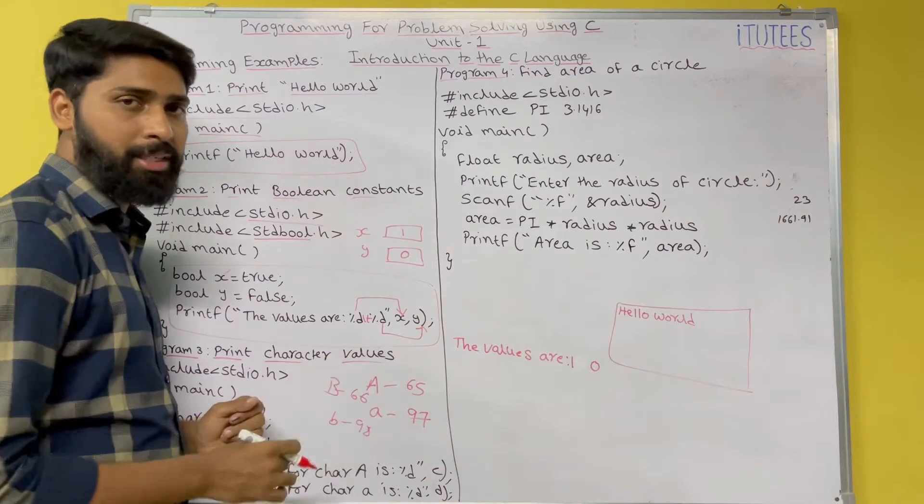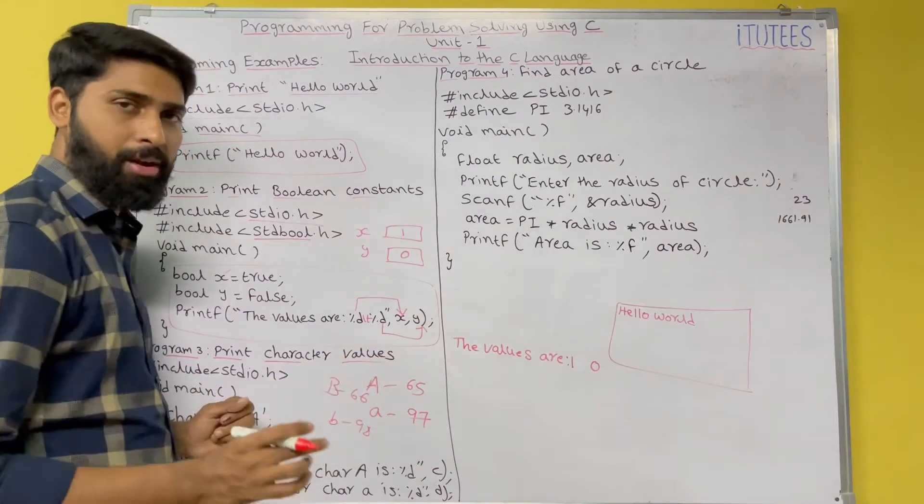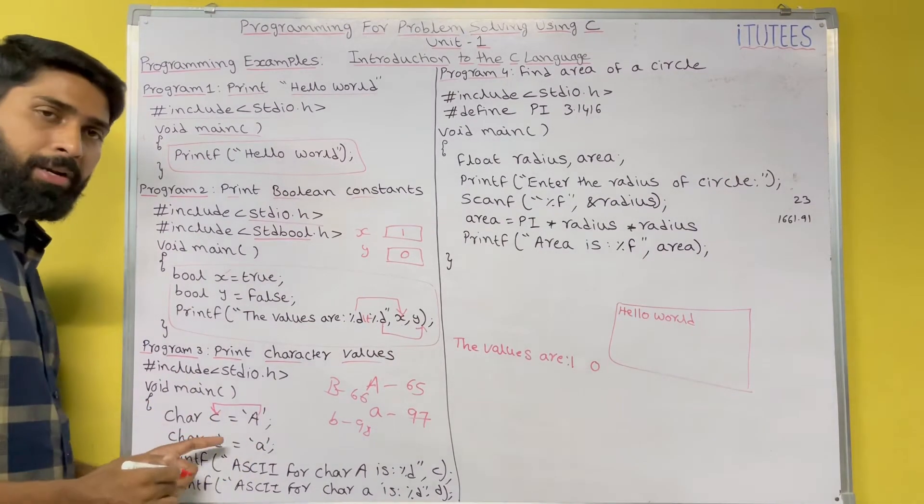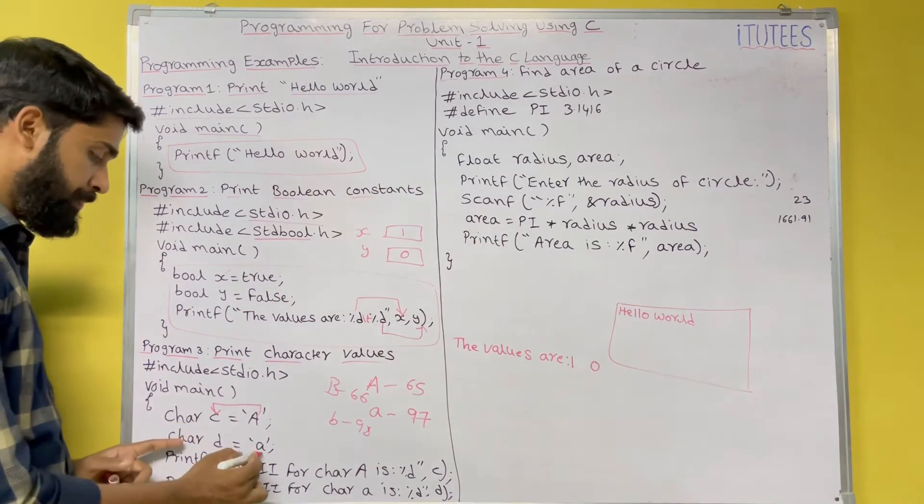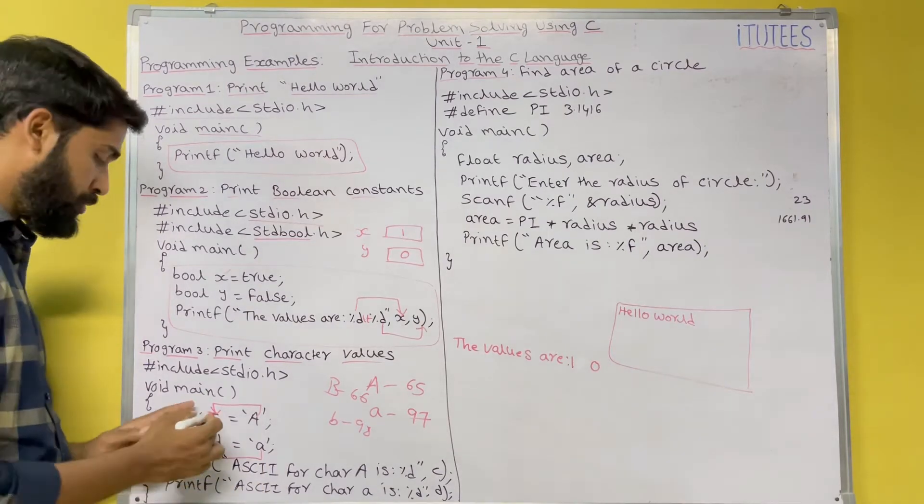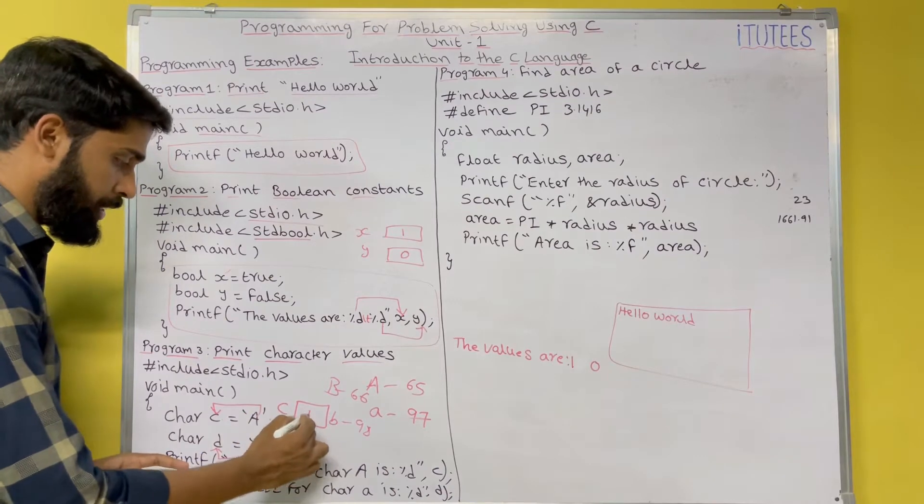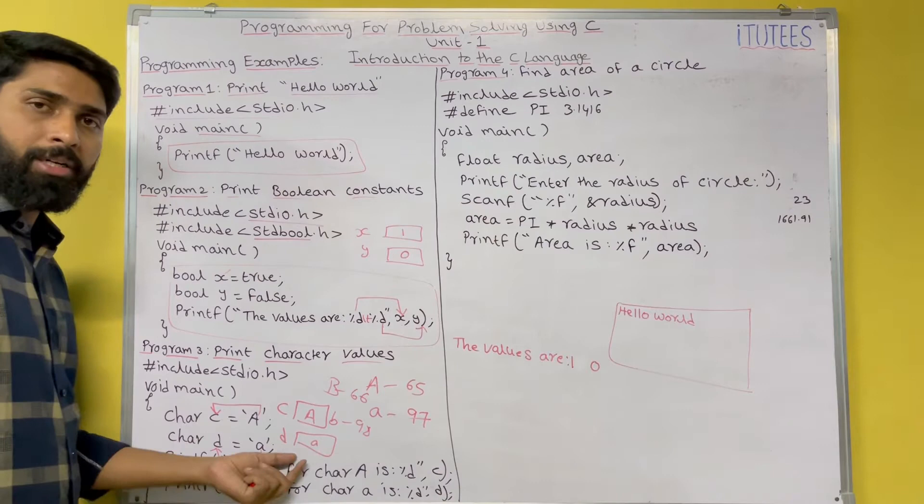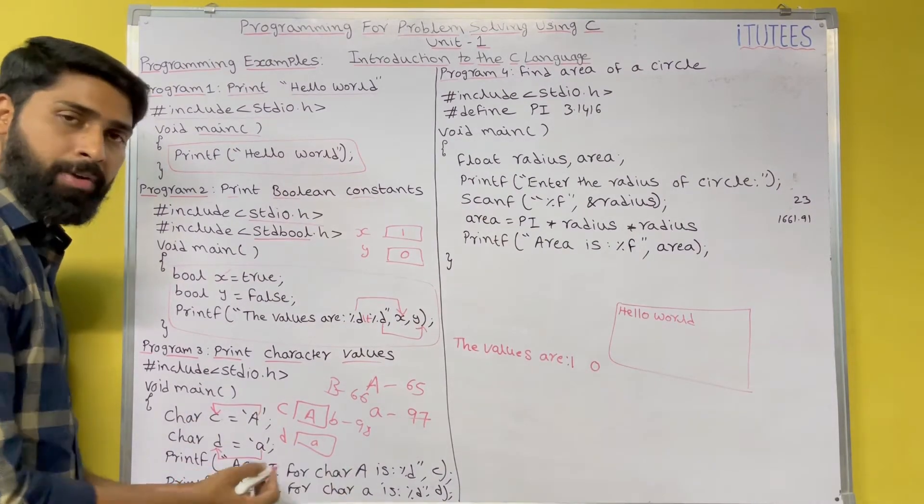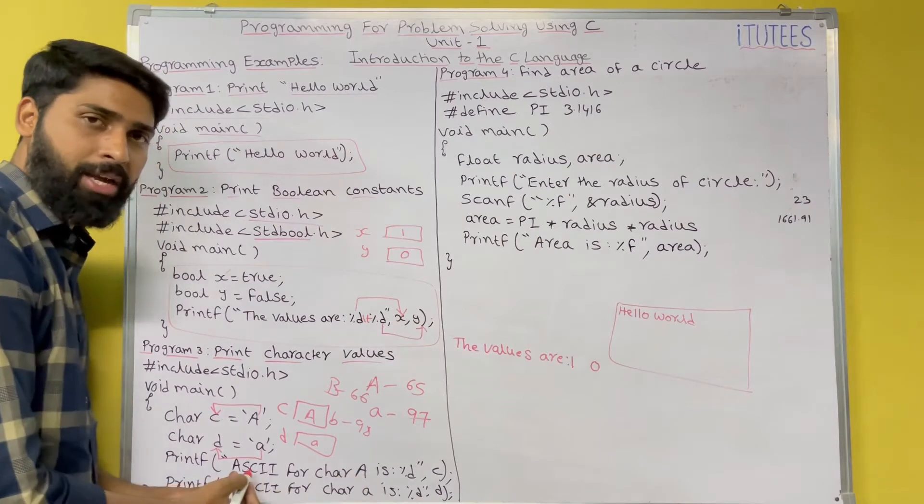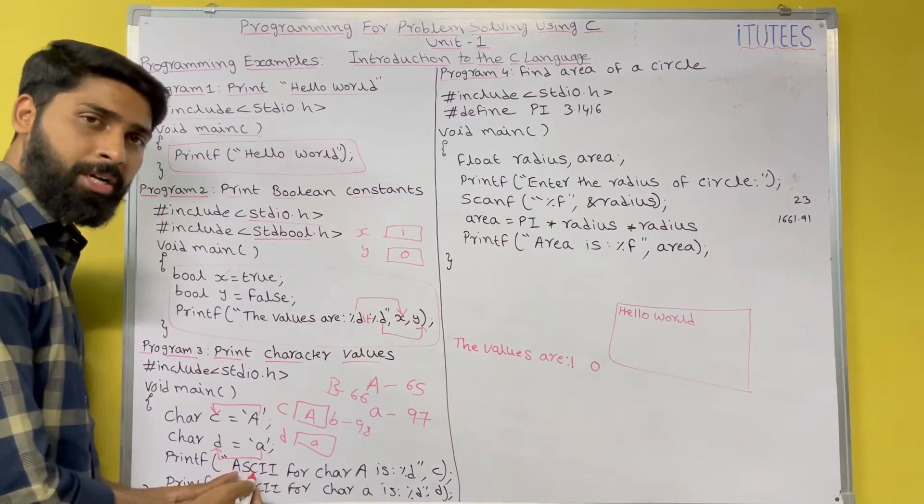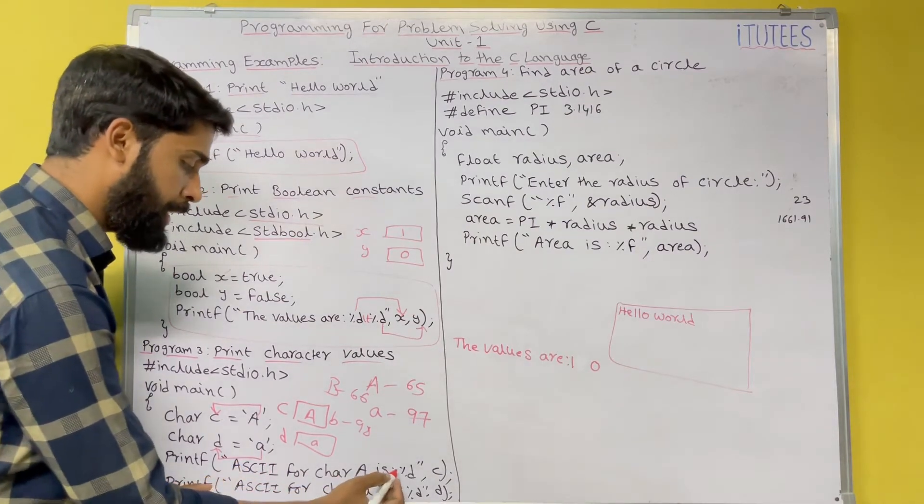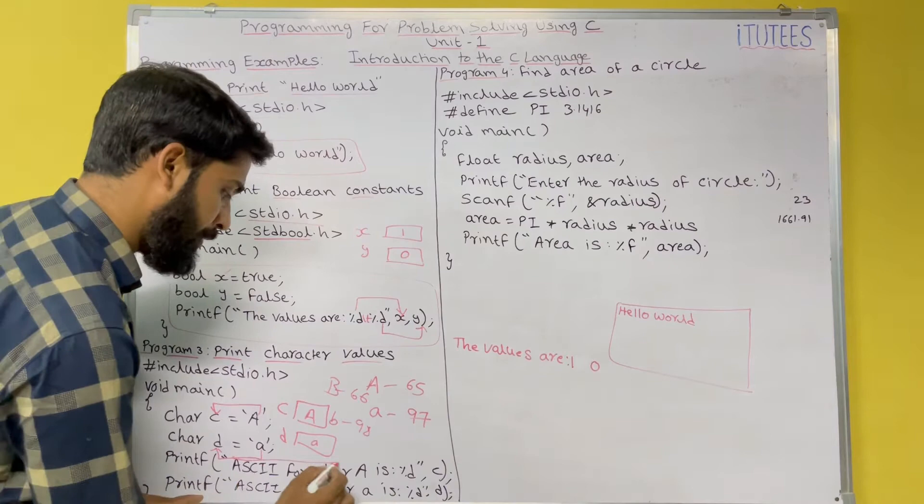All the character sets have some ASCII numbers. These numbers we are called as a value of the character. First, assign this capital A to a variable and small a to another variable. These two are the c and d. The c variable contains the character A. The d variable contains the character small a. Now, I want to print these values. ASCII for char a. What is the ASCII? ASCII means American Standard Code for Information Interchange.